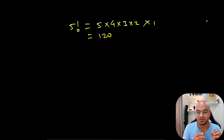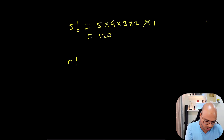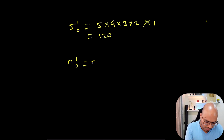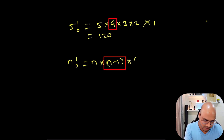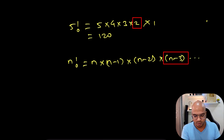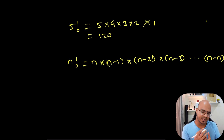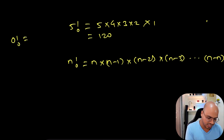If you want to represent that in a mathematical format and generalize it — say you want to find the factorial of n — the formula is n × (n−1) × (n−2) × (n−3), and this goes on until you reach n minus n. Now n minus n is 0, and the value of 0 factorial is 1 — you can just take that as given.